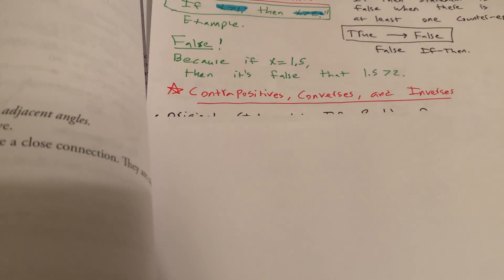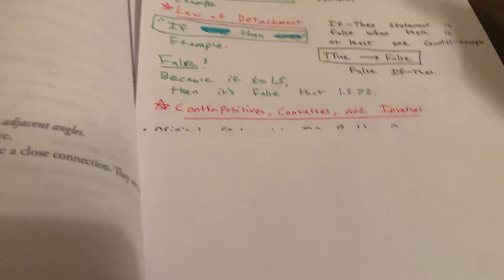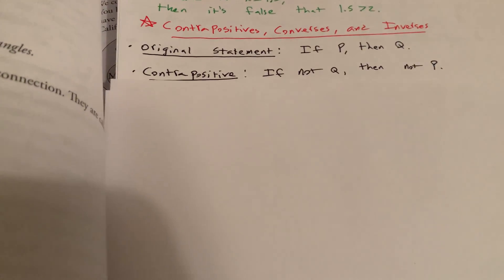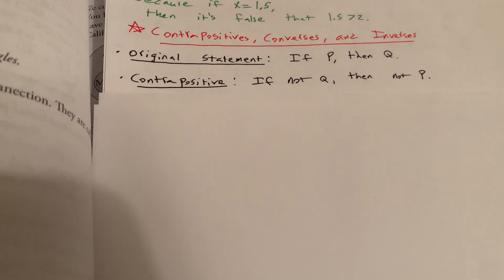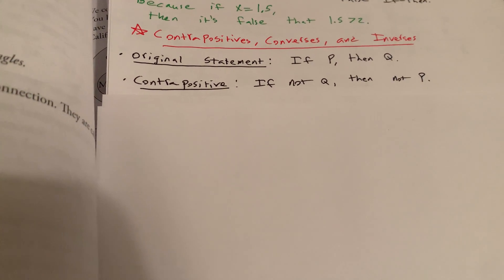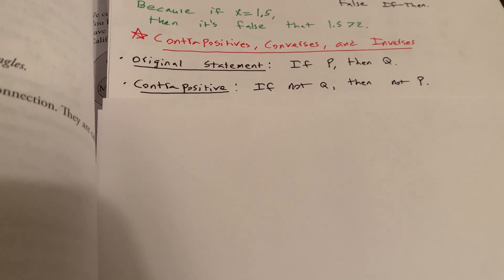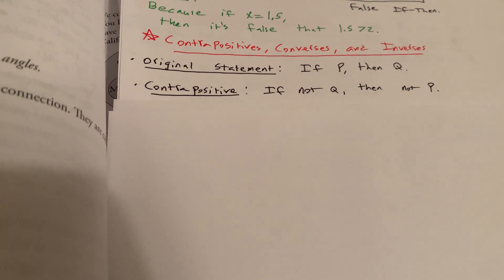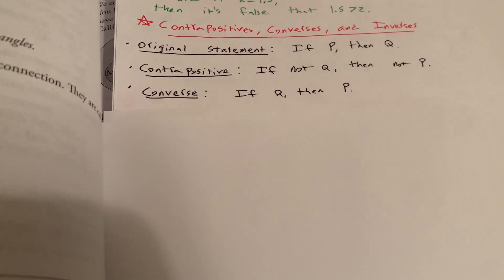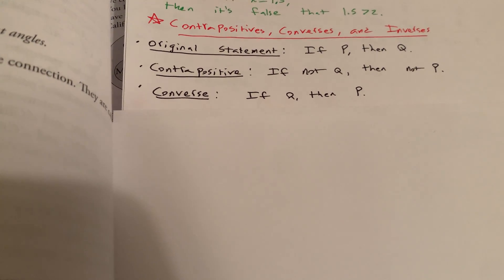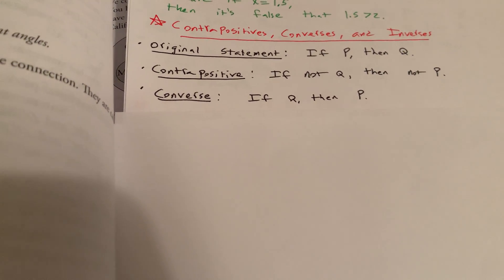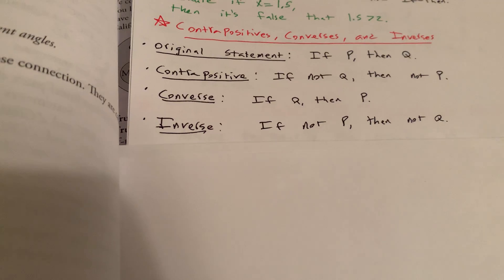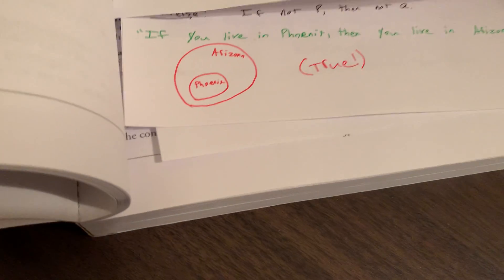Then we can think about contrapositives, converses, and inverses. That is an important topic when thinking about conditionals. So the original statement is just if P, then Q. Then we have the contrapositive, which is if not Q, then not P. So we're flipping the premise, hypothesis, and the conclusion. We're flipping the P and the Q, and we're negating them. We have the converse, if Q, then P. We just flip the P and the Q there. And then the inverse. We just negate the P and we negate the Q. So if not P, then not Q.